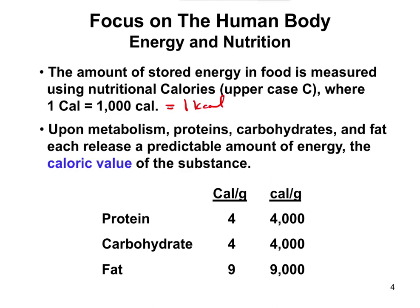A typical diet is around 2,000–2,500 Calories, which would be 2–2.5 million regular calories. When we look at food, there are three main biochemicals: proteins, carbohydrates (sugars), and fats. Fats have the most stored energy at 9 Calories per gram, while carbohydrates and proteins each provide 4 Calories per gram.